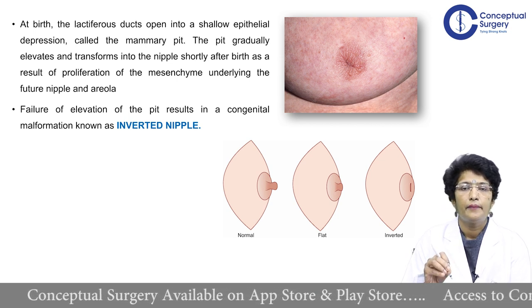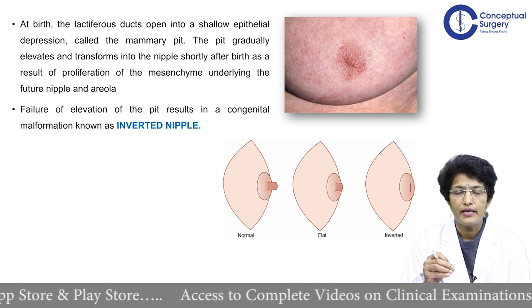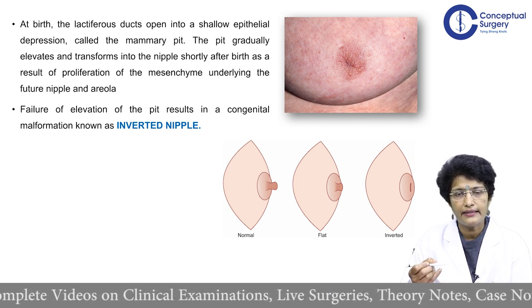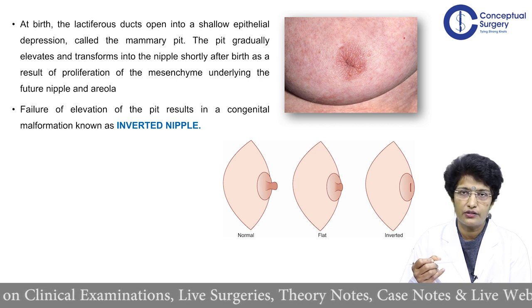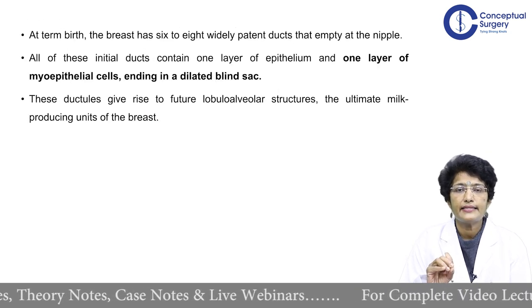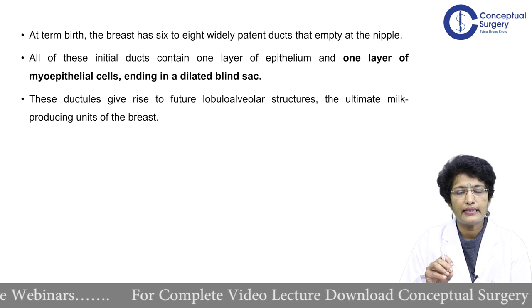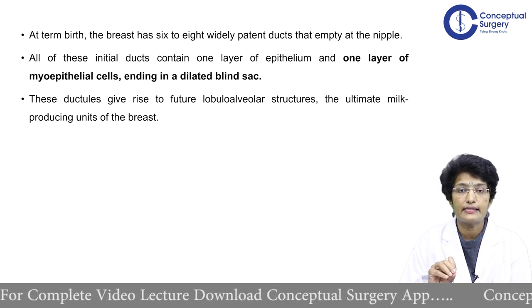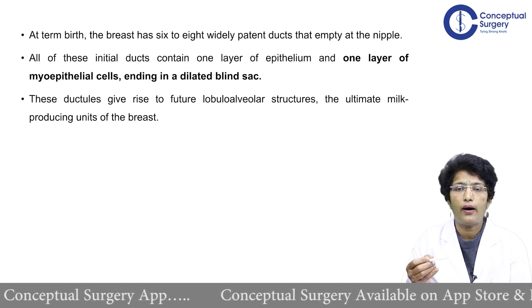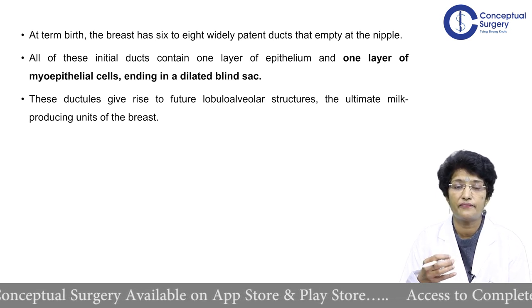Sometimes this pit fails to elevate, which explains the inverted nipple we see in many women. Inverted nipple can be an indication of disease, but if the patient says the nipple has always been like that, it is a congenital condition and not acquired due to disease. At term birth, the breast has about six to eight widely patent ducts emptying at the nipple, all with one layer of epithelium and one layer of myoepithelial cells, ending in a saccule. These ductules give rise to the lobulo-alveolar structures — the ultimate milk-producing units.